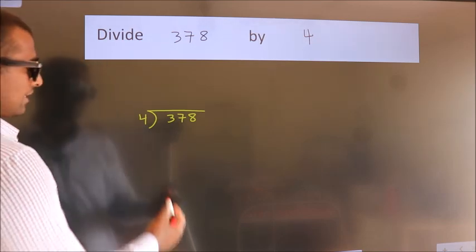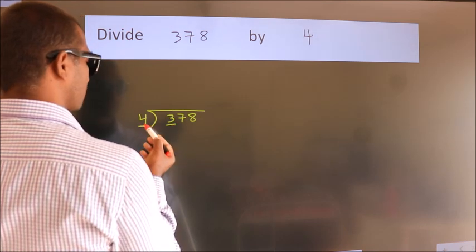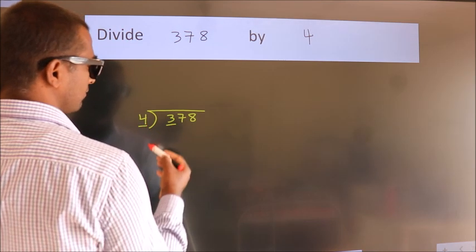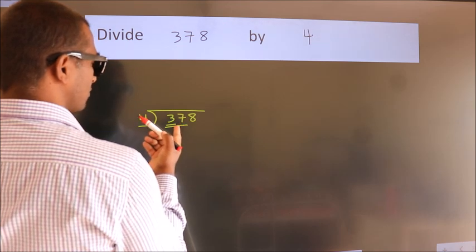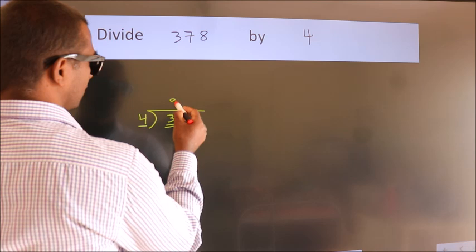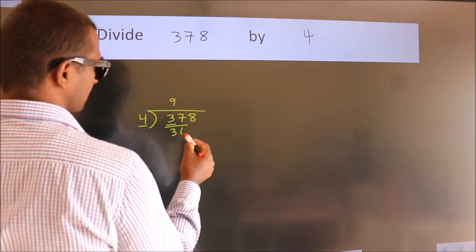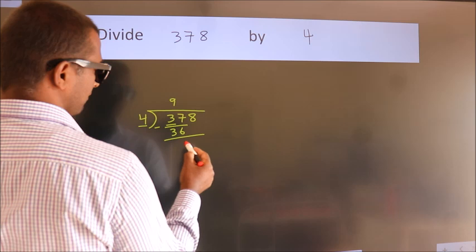Next, here we have 3 and here 4. 3 is smaller than 4, so we should take 2 numbers: 37. A number close to 37 in the 4 table is 4 times 9 equals 36. Now we should subtract, and we get 1.